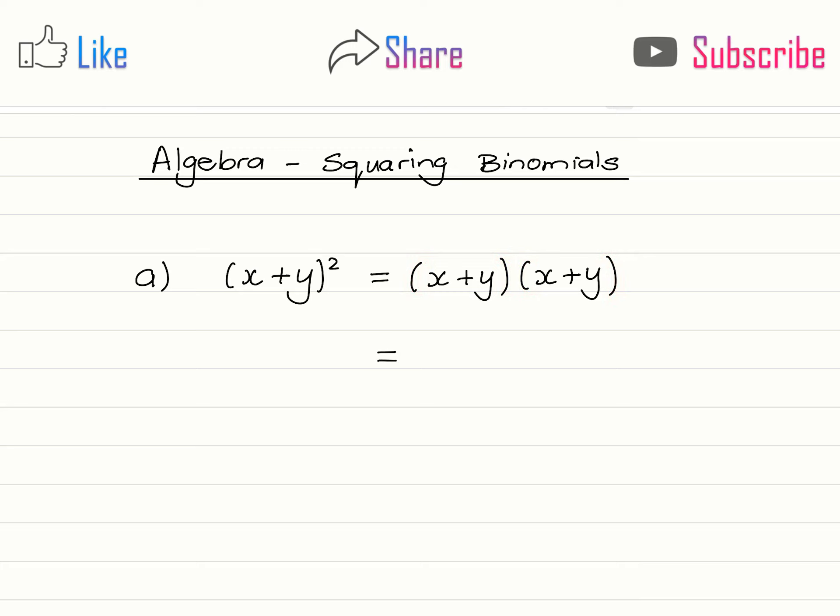And in one of our previous videos we learned how to multiply this out. So we take the x in the first bracket and distribute it between the two terms in the second bracket, and then we take the y and multiply it with the two terms in the second bracket.